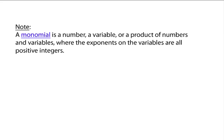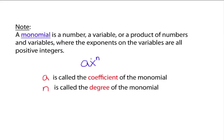A monomial essentially has this form: a times x to the n power. There are pieces of this we want to know the names of. The 'a' is called the coefficient of the monomial. Every monomial has a coefficient — it's that number multiplied out in front of the variable, or with the variable.